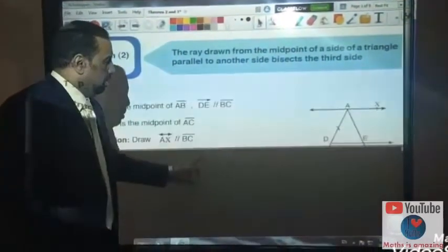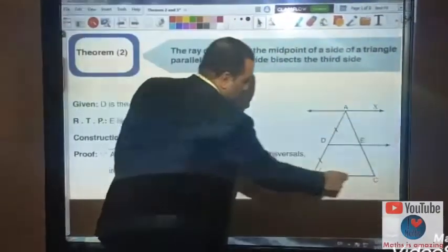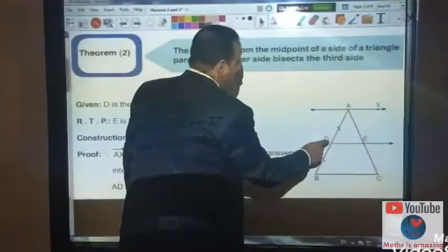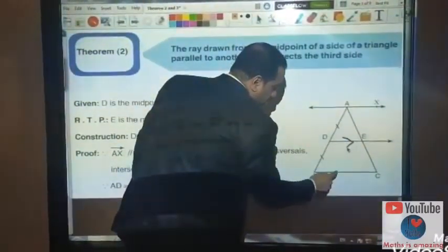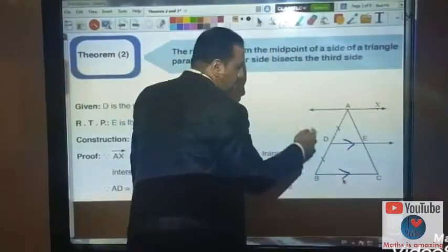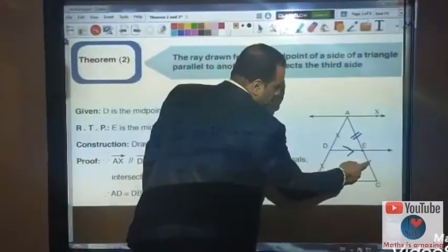Let's see the figure. ABC is the triangle. If D is the midpoint and DE parallel to BC, then E is the midpoint of AC.